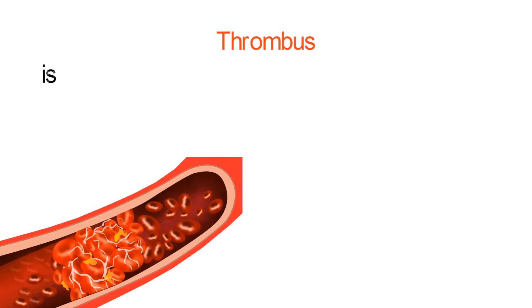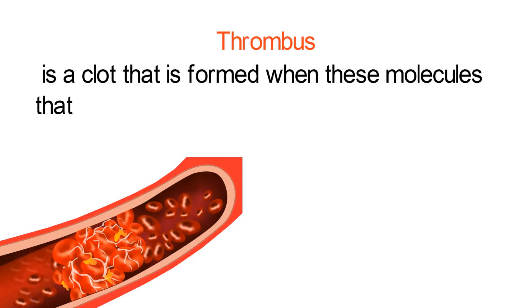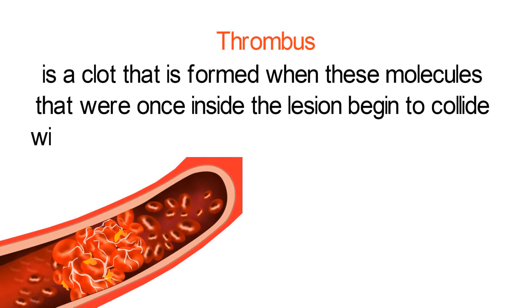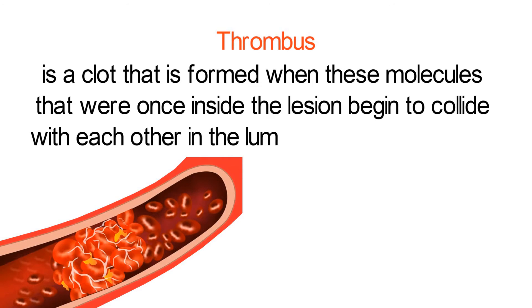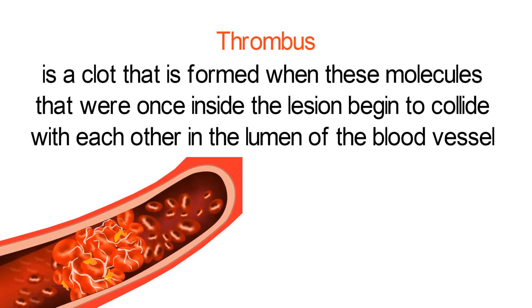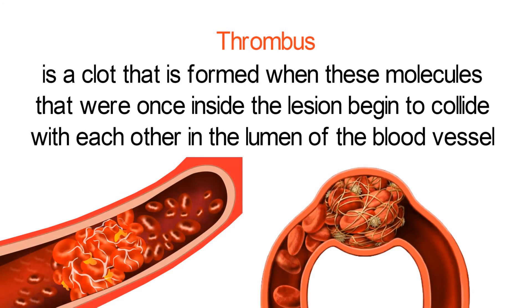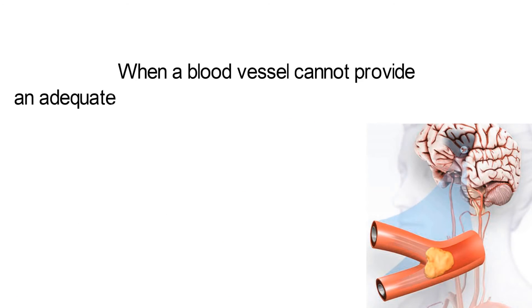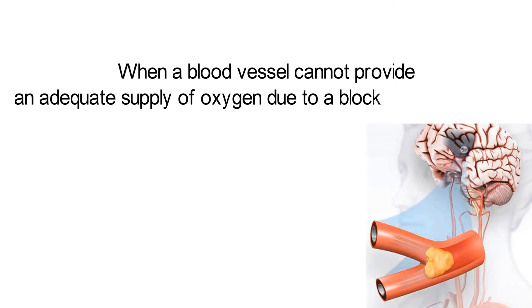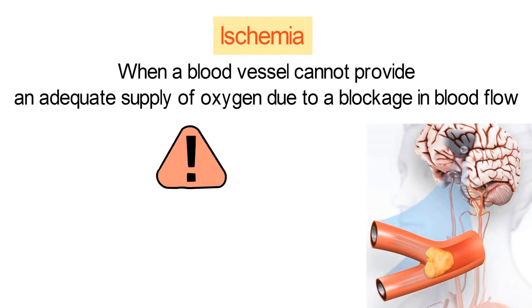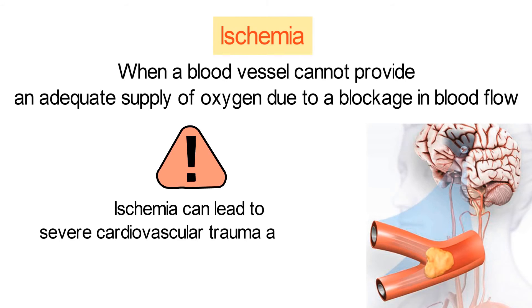A thrombus is a clot that is formed when these molecules that were once inside the lesion begin to collide with each other in the lumen of the blood vessel. As the thrombus increases in size, it can damage the vessel wall and block blood flow through the blood vessel. When a blood vessel cannot provide an adequate supply of oxygen due to a blockage in blood flow, it is called ischemia. Ischemia can lead to severe cardiovascular trauma and death.